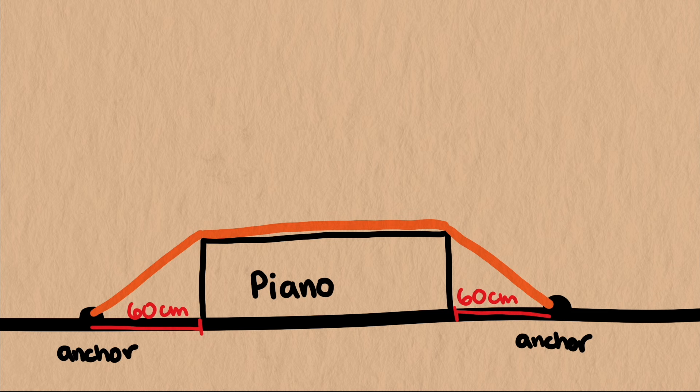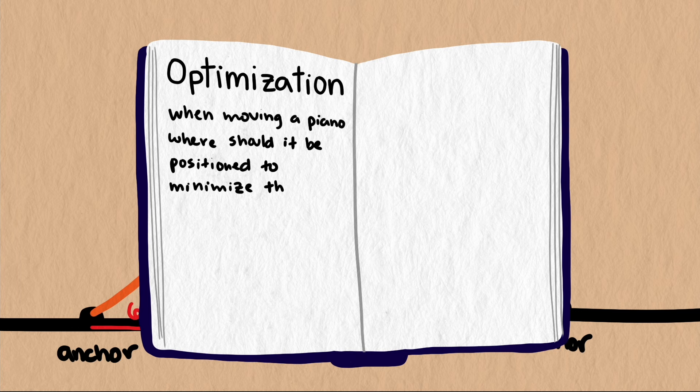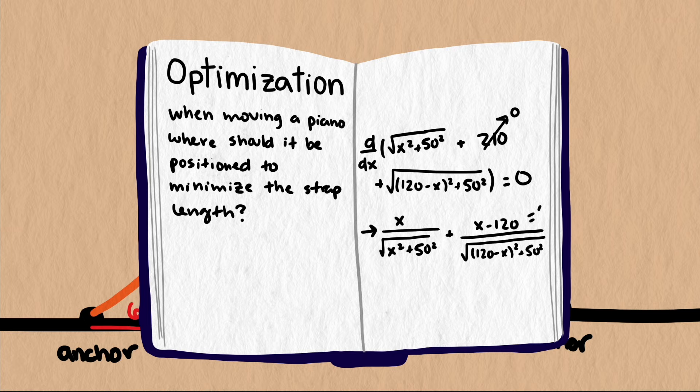We could have also found the minimum by using calculus. We can think about this as an optimization problem. Trying to find what position of the piano gives us the minimum length of the strap. We can use the derivative and find out where that is zero, which is a potential minimum or maximum. Again, we get x equals 60.